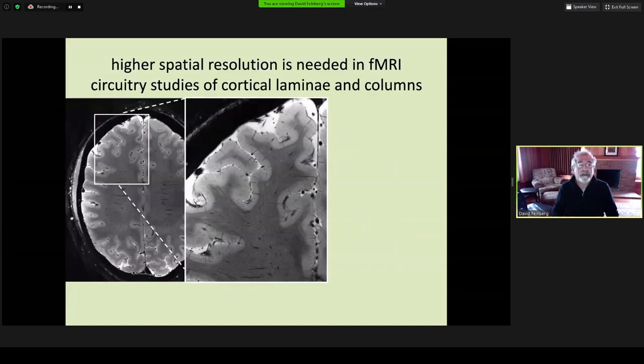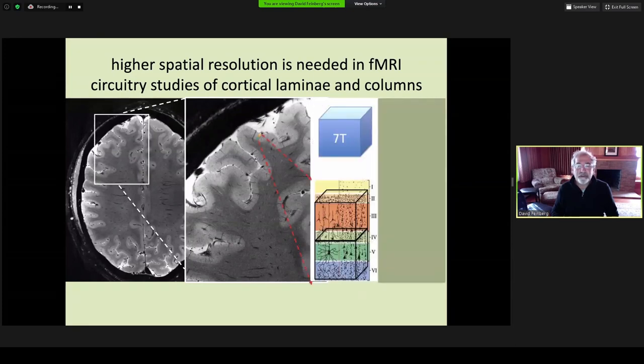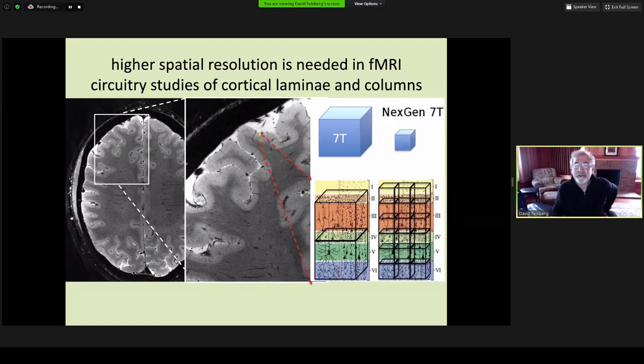Why do we need higher spatial resolution in fMRI circuitry studies of cortical lamina and columns? Currently, 7T provides down to about 0.75 isotropic resolution, which gives about two or three pixels across most cortex, which is two to four millimeters typically. Higher resolution with a next-gen 7T scanner will enable imaging with much less partial voluming of the layers as well as the pial vessels.